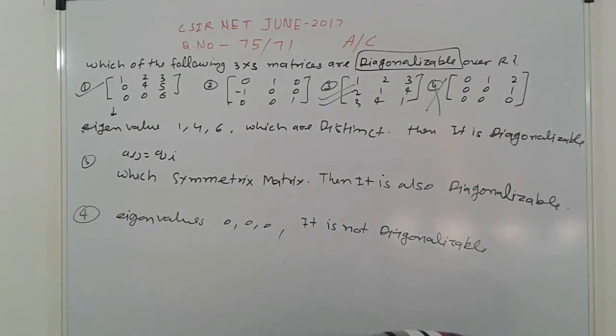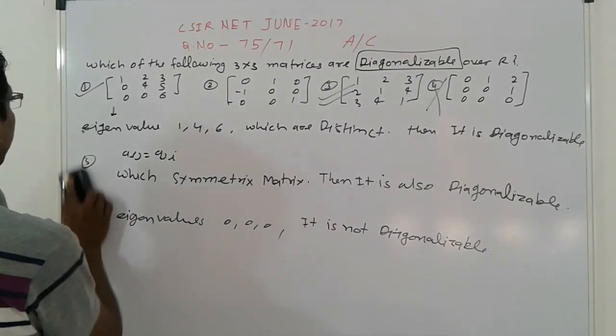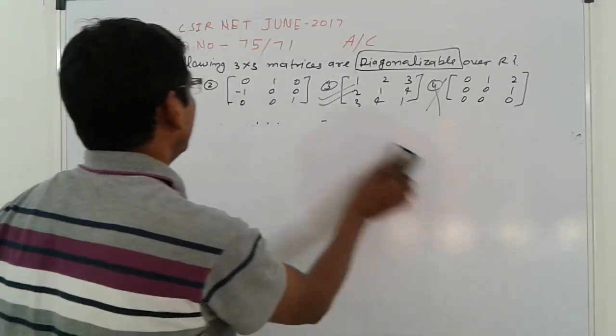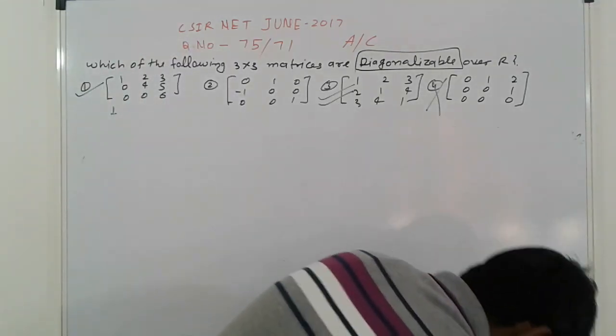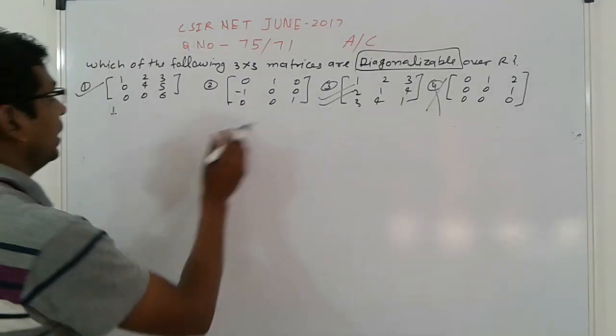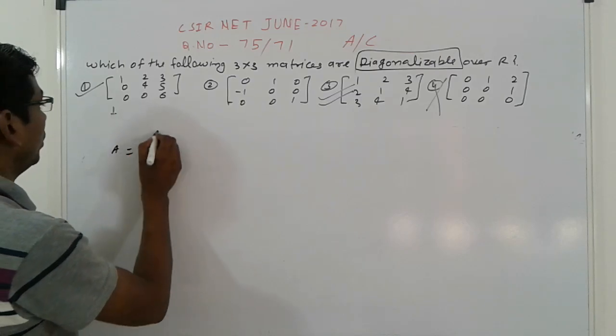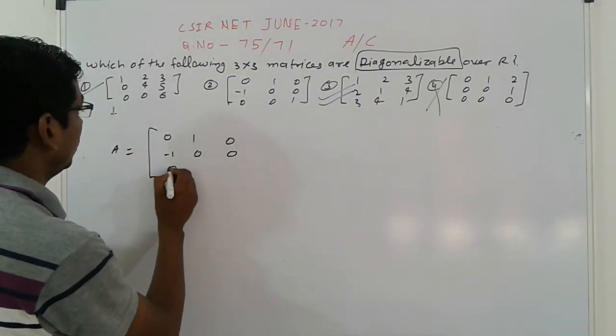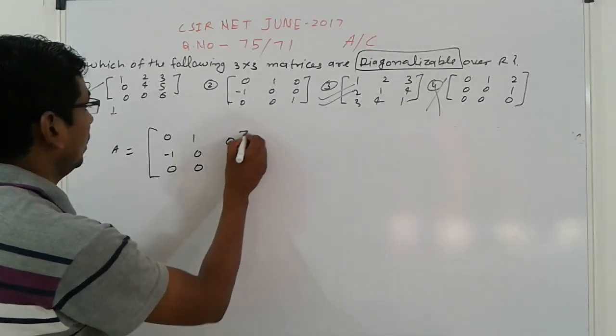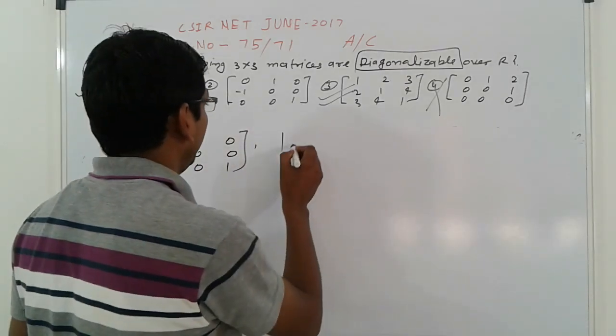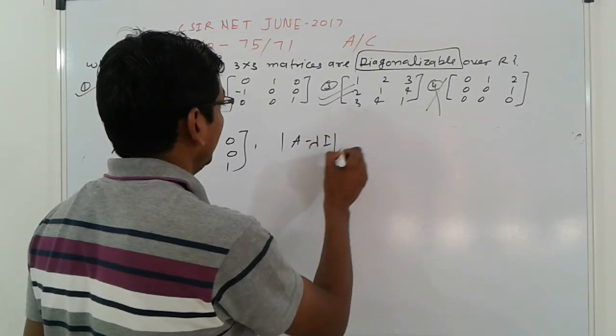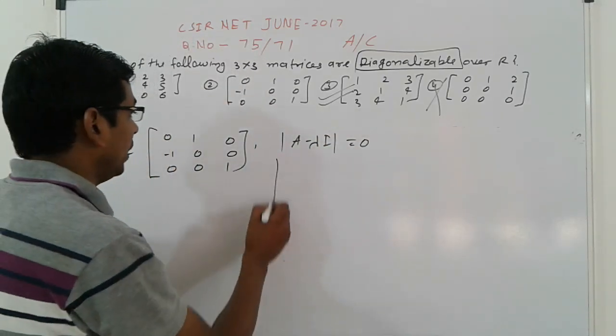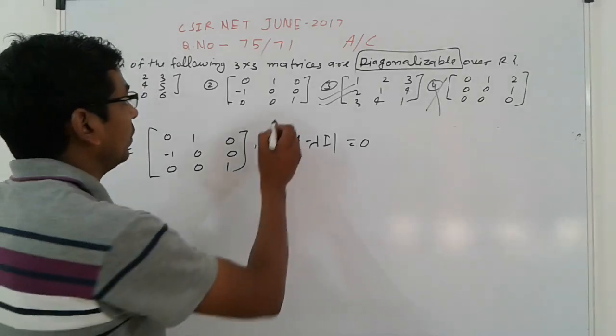Now come to the second option, which is not symmetric. Suppose A equals this: zero one zero, minus one zero zero, zero zero zero. You find out the characteristic equation |A - λI|. Find out the characteristic equation to find the eigenvalue.